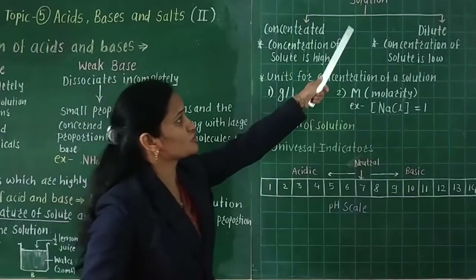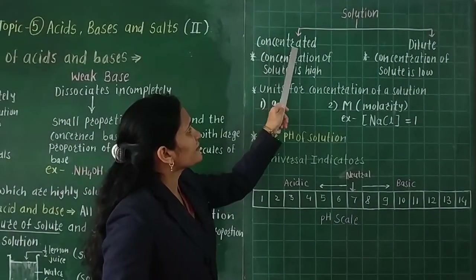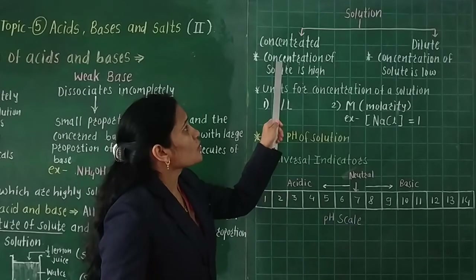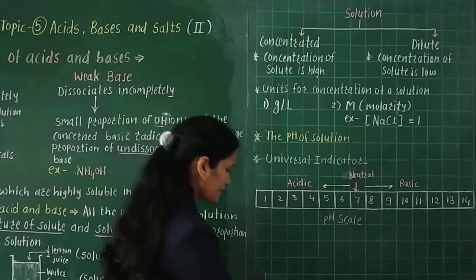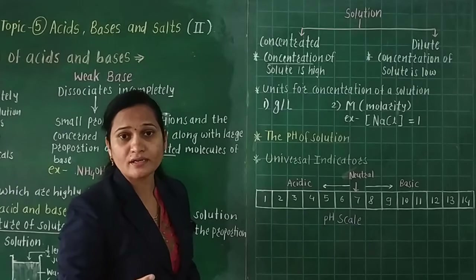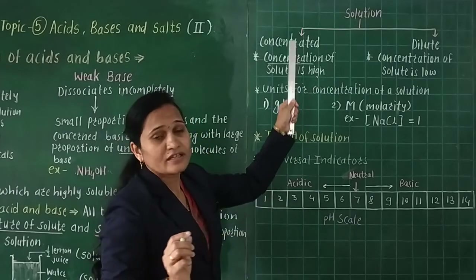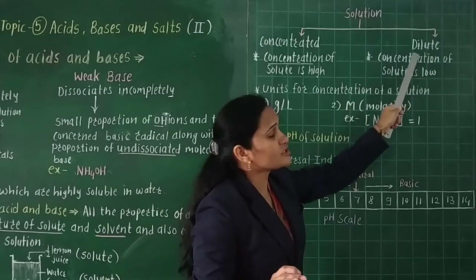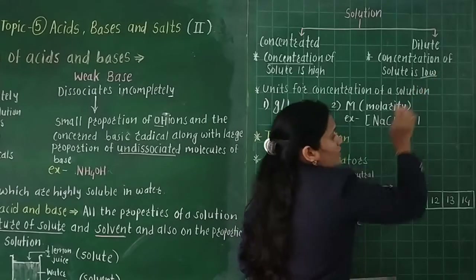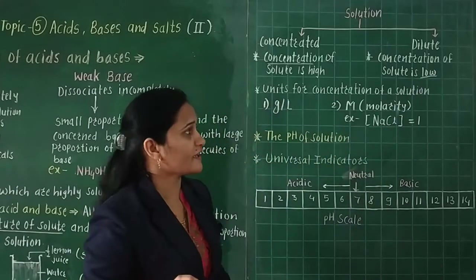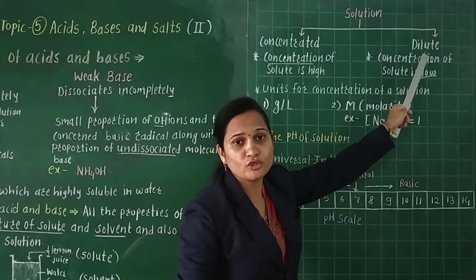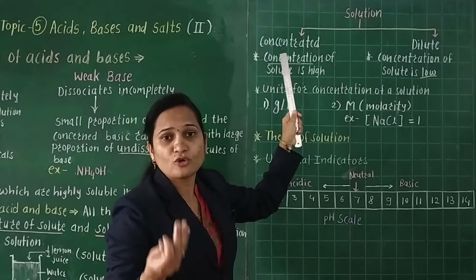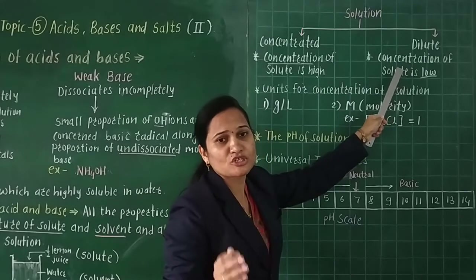There are two types of solutions: concentrated solution and dilute solution. Concentrated solution means the concentration of solute is high — concentration means the proportion of solute. If the proportion of solute is high, it is a concentrated solution. Dilute solution means the proportion of solute is low. That type of solution is known as a dilute solution.